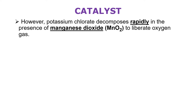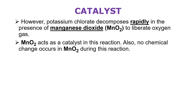However, potassium chlorate decomposes rapidly in the presence of manganese dioxide to liberate oxygen gas. So if you want potassium chlorate to decompose faster, you add manganese dioxide. Manganese dioxide acts as a catalyst here. No chemical change occurs in manganese dioxide during the reaction — it does not react with potassium chlorate at all; it remains as it is and only speeds up the chemical reaction.